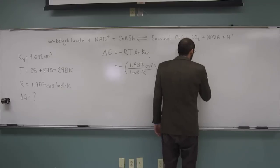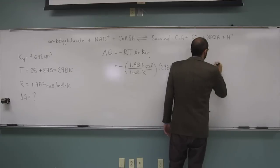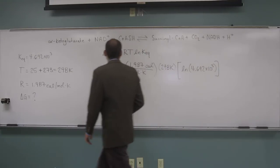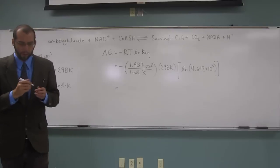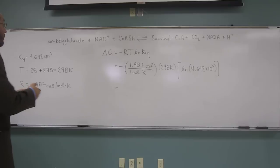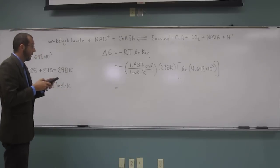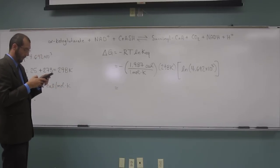Okay, KEQ is 4.692 times 10 to the third. So I usually will do these backwards, I'll do this part first. So ln of 4.692 times 298 times negative 1.987.